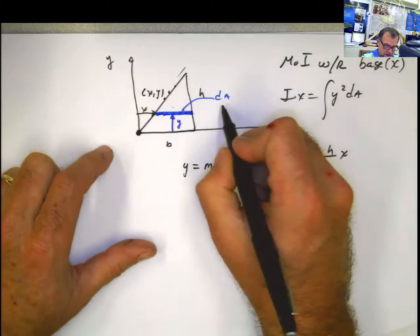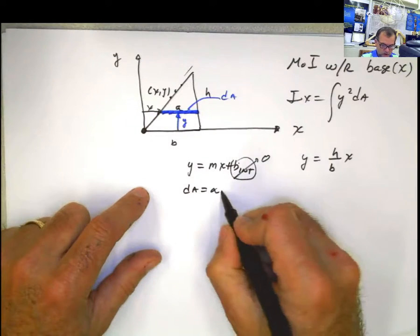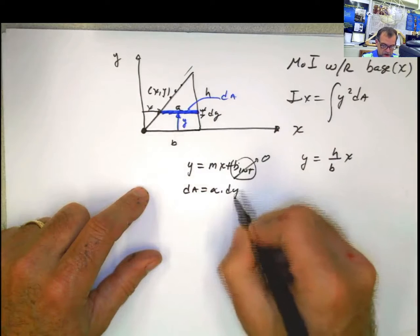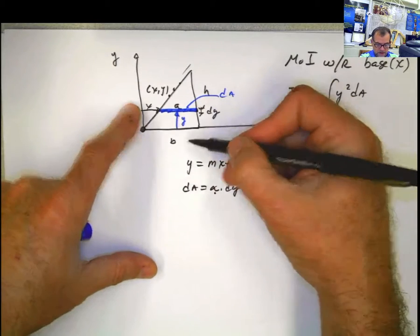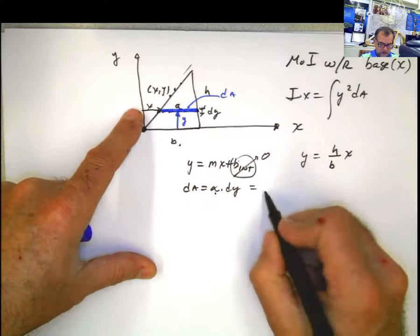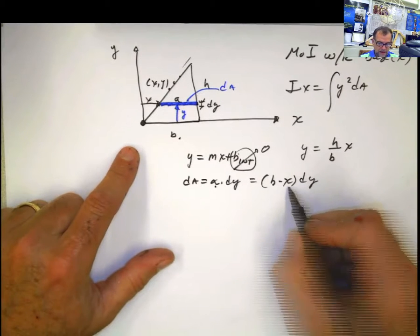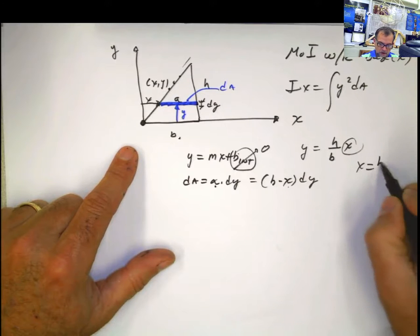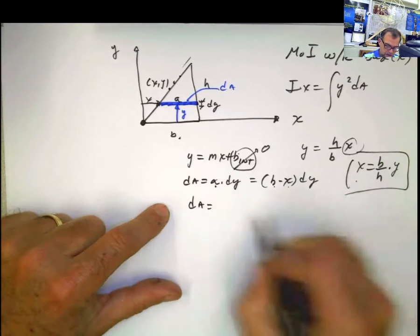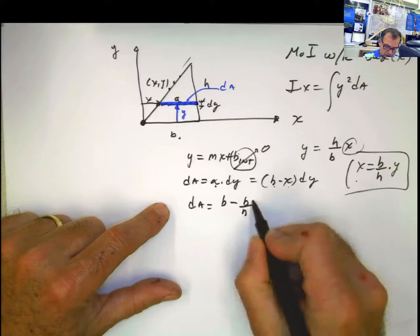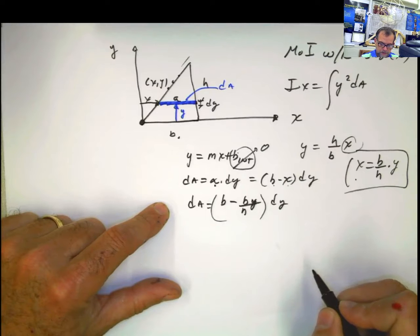My differential of area is that distance from here to here that I call small a multiplied by this thickness dy. That distance a is the total distance b minus the variable distance x. So it's b minus x multiplied by dy. x is already found - x equals b over h multiplied by y. I plug this in and my dA is b minus b over h times y multiplied by dy.